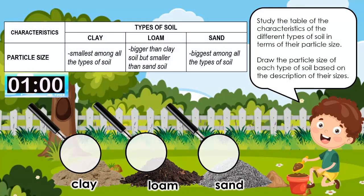Study the table of the characteristics of the different types of soil in terms of their particle size. Draw the particle size of each type of soil based on the description of their sizes. You have one minute to do this.